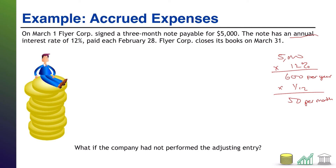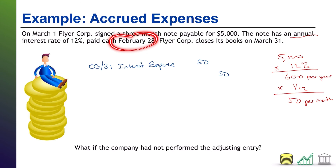So when we get to March 31st, we're going to book an adjusting journal entry. We've got to record that interest expense — we've incurred that cost, one month of interest, and we just haven't recorded it yet: $50. What's the credit that goes with this? We're going to owe that $50 to someone later on, specifically on February 28th, so we're going to record interest payable, a liability for that amount we owe. And that's our adjusting journal entry.